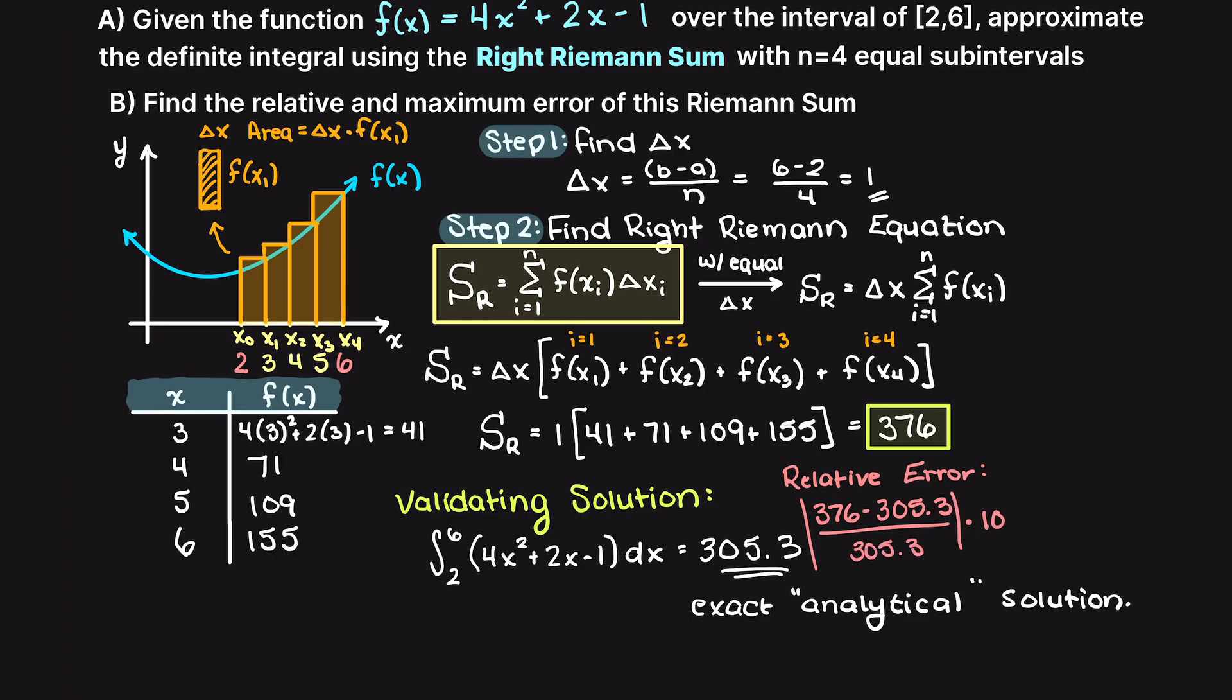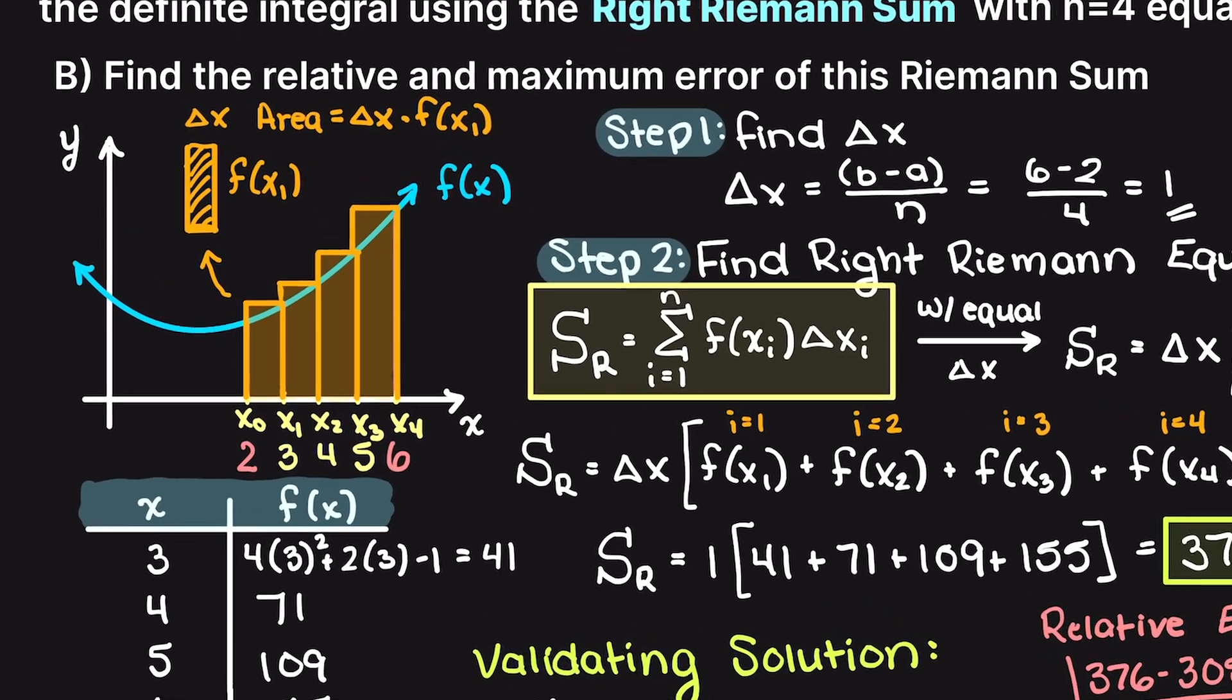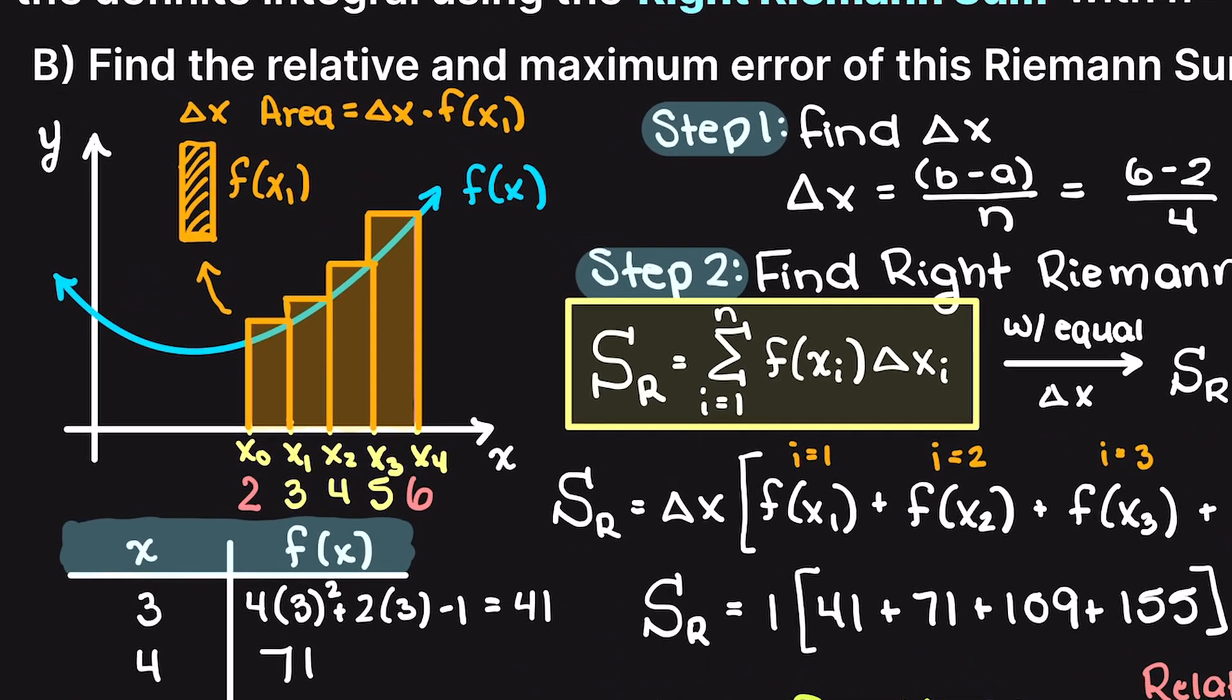That means that our right Riemann sum is off by a relative error of 23.1%, which is not great, but this does make sense based on our schematic here. As we learned in the past theory video, with a monotonically increasing function, the right Riemann sum will way overestimate our integral, which is obvious with these red regions here.